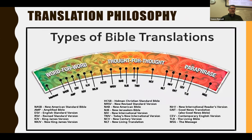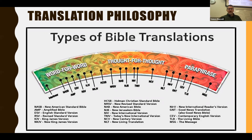In your notes there's a table showing the spectrum of Bible translation philosophy. The word 'hybrid' doesn't appear on the diagram, but it's the idea between word-for-word and thought-for-thought. That covers types of Bible translations and their philosophy.